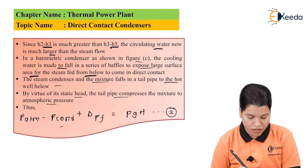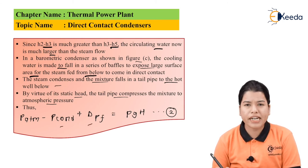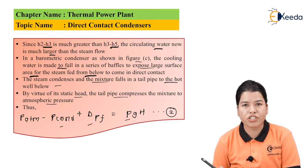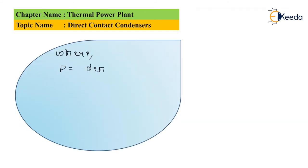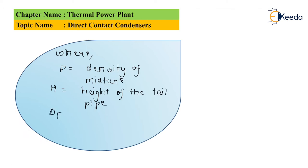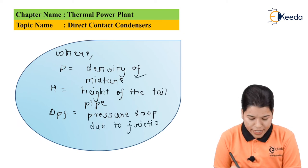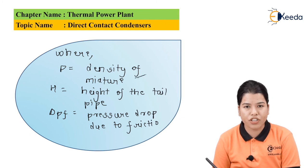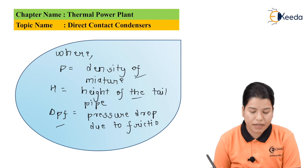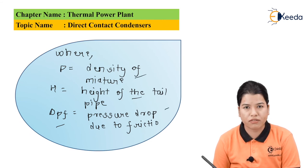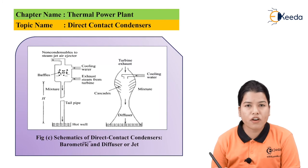Therefore, P_atmosphere minus P_condensate equals delta_pf, which equals ρgh — this is equation number two. Where ρ is the density of the mixture, h is the height of the tail pipe, and delta_pf is the pressure drop due to friction. Figure C shows the schematics of direct contact condensers — barometric and diffuser (jet).